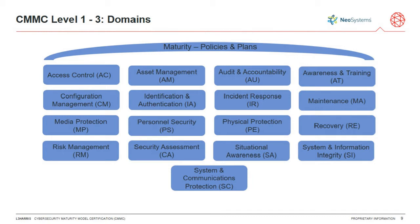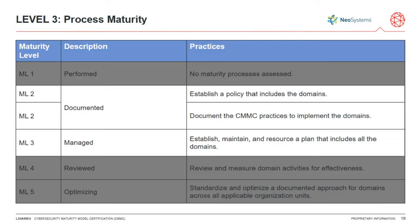As we talk about each domain, keep in mind that you're going to end up with a process maturity rating. You should be able to think: do we get to ML3 managed? If not, you're looking at some kind of deficiency on that control. A big part of CMMC is building an observable system that's documented and has an easy way to communicate it to your auditor.